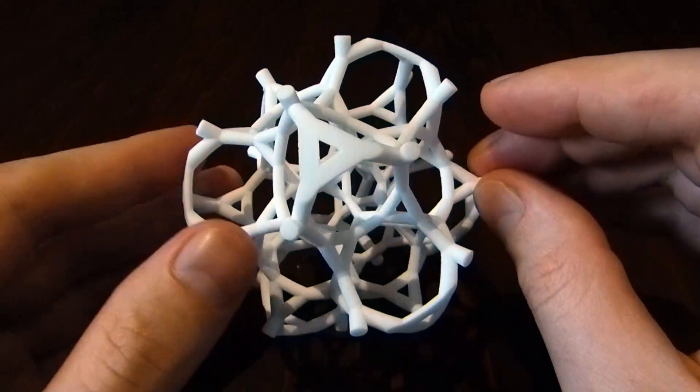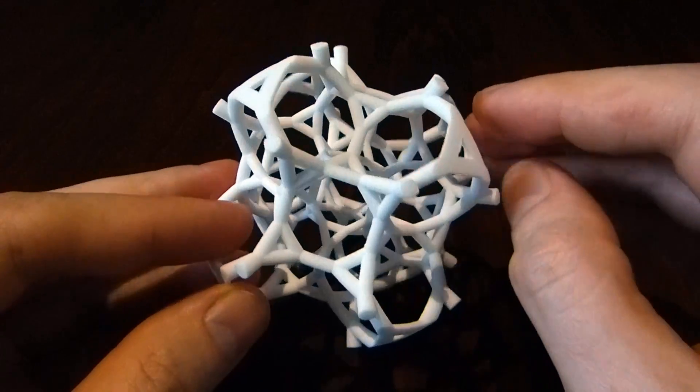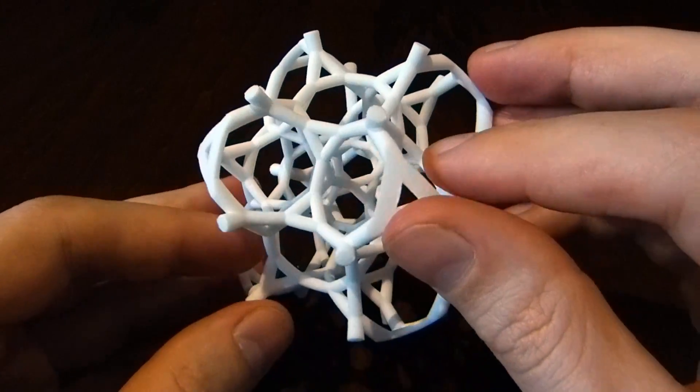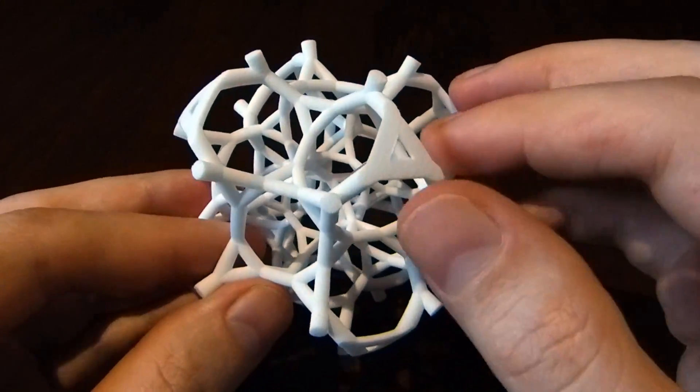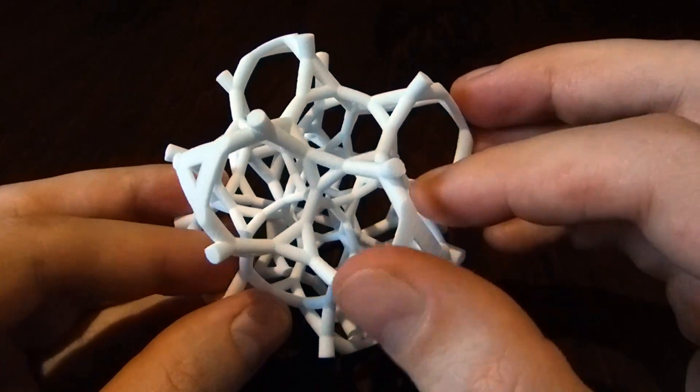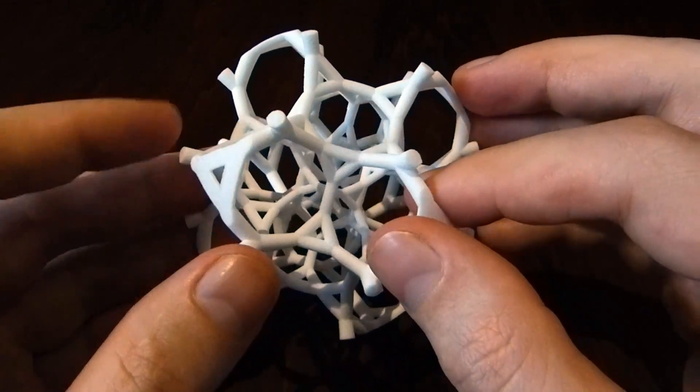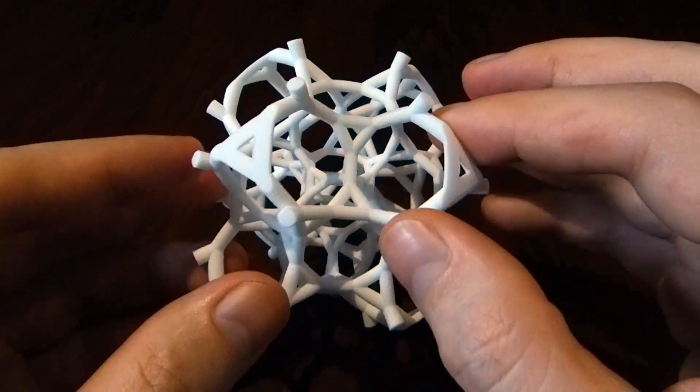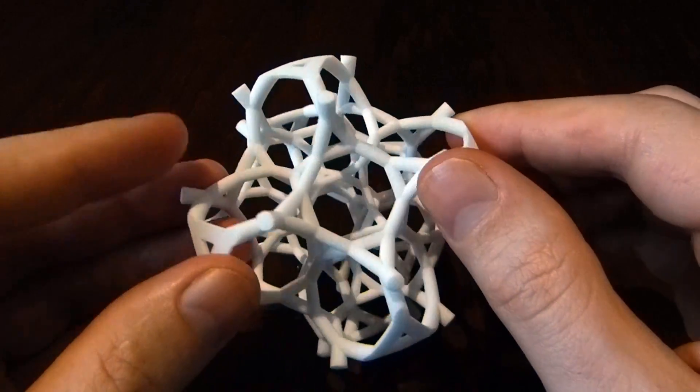So this is not a regular four-dimensional polytope. This is only a cell transitive polytope, which means that each of the cells can be taken to each of the other ones in any orientation by just a rotation of the whole object in four dimensions.